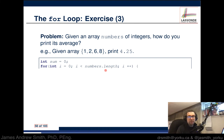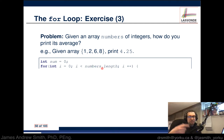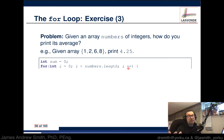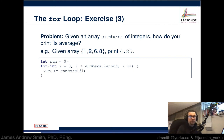We use 'numbers.length' — Java interprets this as a command to get the length of the array called 'numbers'. The loop continues until the number of iterations equals the length of the array, at which point we exit. After the second semicolon, we have 'i++', which we could also write as 'i = i + 1' — this updates the counter variable every cycle through the for loop.